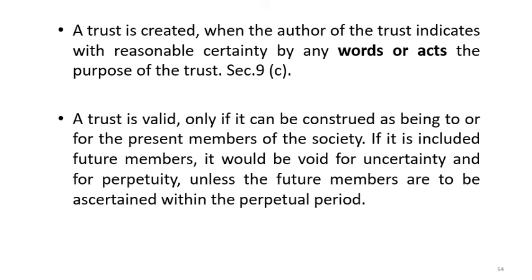Trust is valid if it can be construed as being for the present members of the society. We have studied the perpetuity rule and purposeful succession under Section 110 of the Trusts Ordinance. If future members are included, it would be void for uncertainty and for perpetuity, unless the future members are to be ascertained within the perpetuity period. A trust is always created for the present members of the society, not for future unborn children.